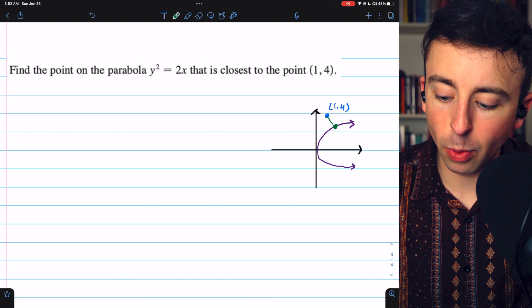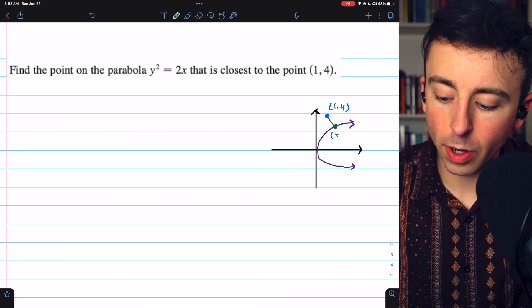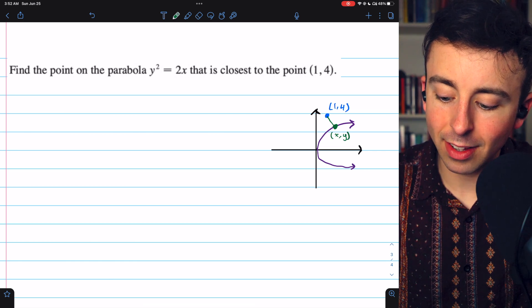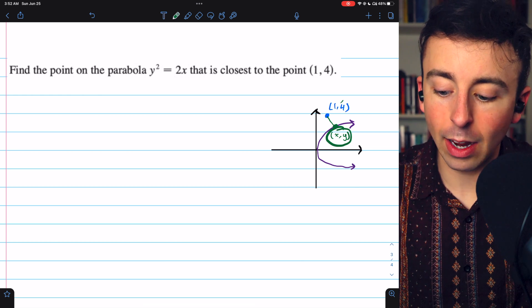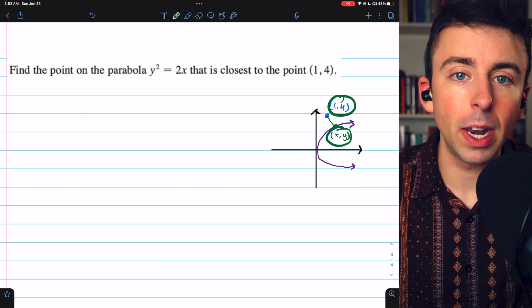So let's just sketch a point on the parabola, say it has coordinates (x,y). The distance between a point (x,y) on the parabola and (1,4) is what we're trying to minimize.